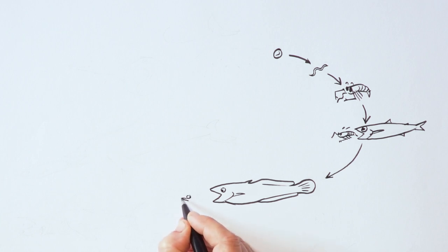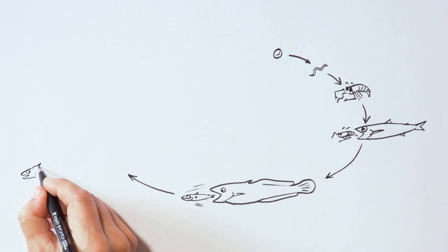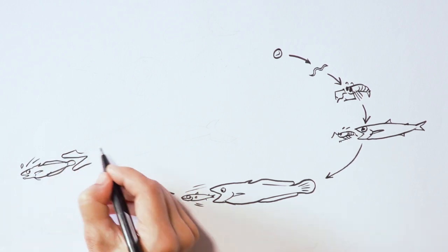And sure enough, the anchovy gets eaten by a bigger fish, for example a hake. The anisakis larva has moved to a new fish, but it continues to wait patiently because its ideal home isn't a fish at all. It's something warmer.